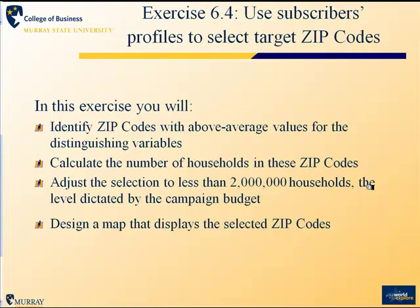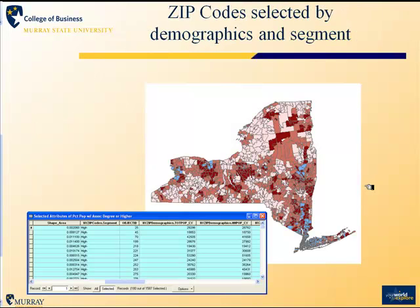In Task 4, we'll use those profiles to select target zip codes. We'll look for zip codes with demographic values that match the characteristics of our high subscribers segment but haven't yet been targeted by the company. We'll use queries to identify those with above-average values for distinguishing variables, and calculate the number of households in those zip codes, adjusting to target two million households that closely match our high subscriber segment.